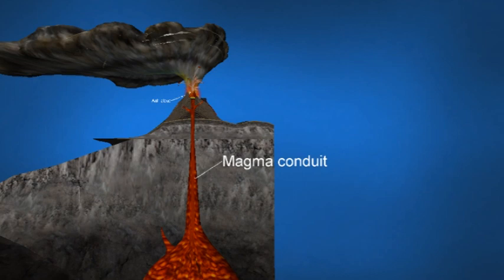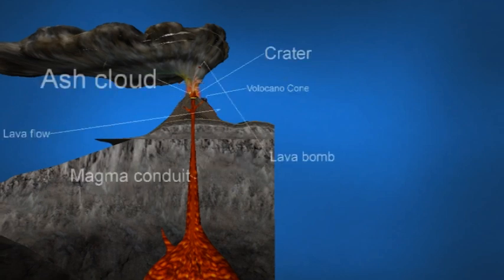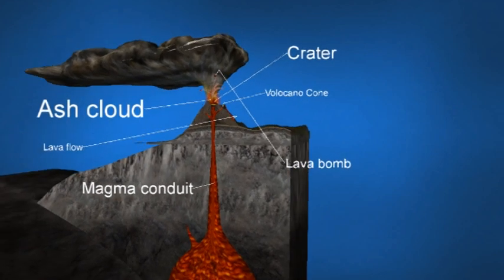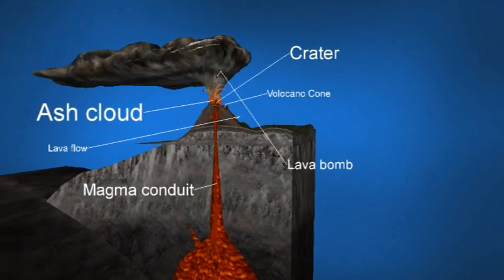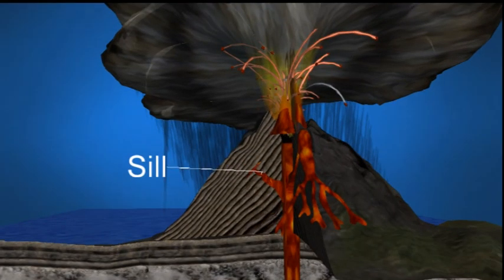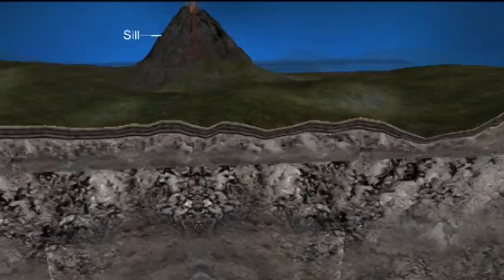Magma conduit: a volcano's main vent is the weak point in the Earth's crust where hot magma has been able to rise from the magma chamber and reach the surface. Dike: it is a flat piece of rock formed when magma hardens in a crack in a volcano.